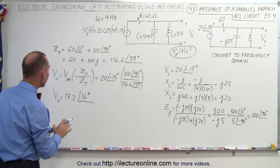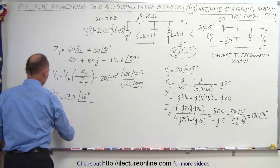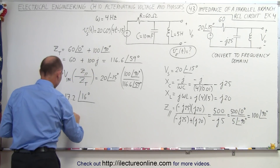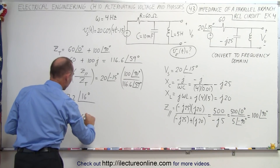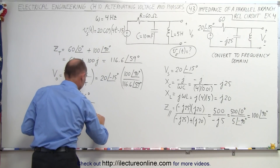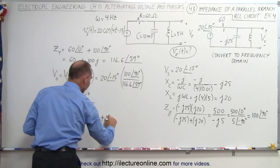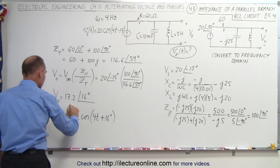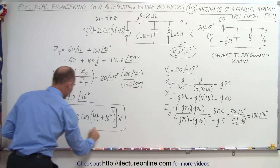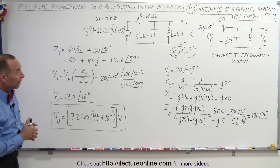Now we convert back into the time domain. The output voltage equals the maximum voltage of 17.2 times the cosine of the frequency times time — the frequency is 4 hertz — plus the phase angle of positive 16 degrees, in volts. And there's our output voltage on that side of the circuit.